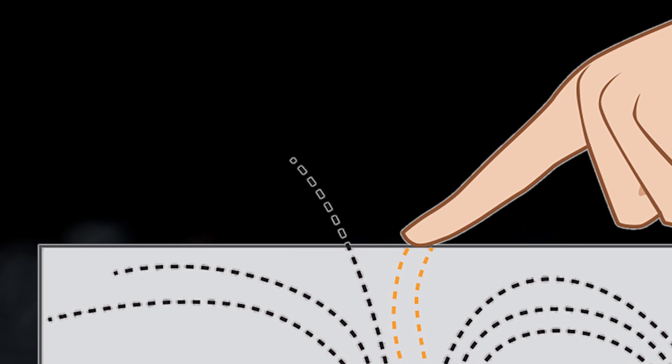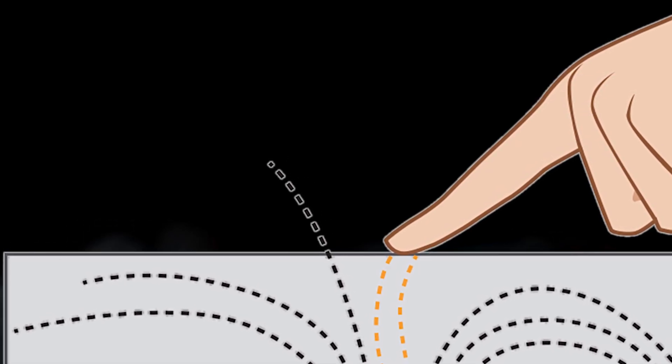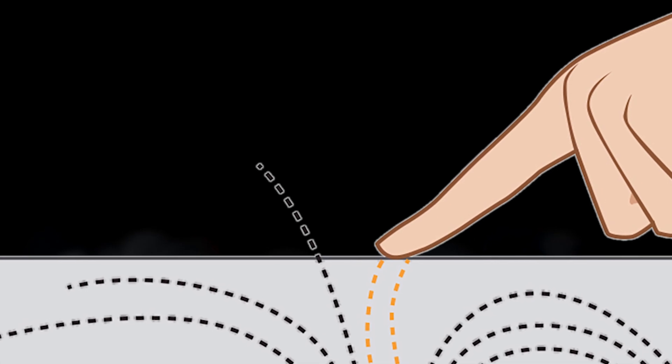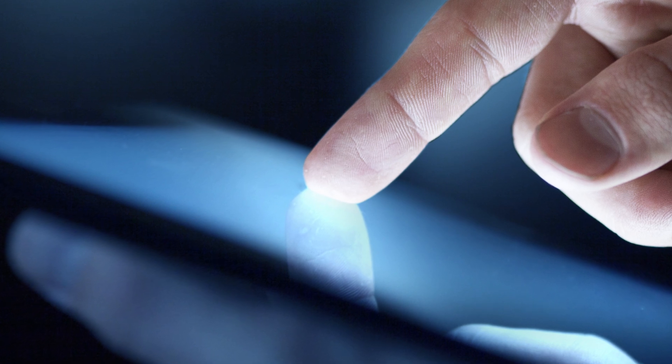When you tap on a touchscreen, the ions in your finger disrupt the electric field and are precisely registered by the sensor apparatus. Materials like ITO that are both transparent and highly conductive are scarce.